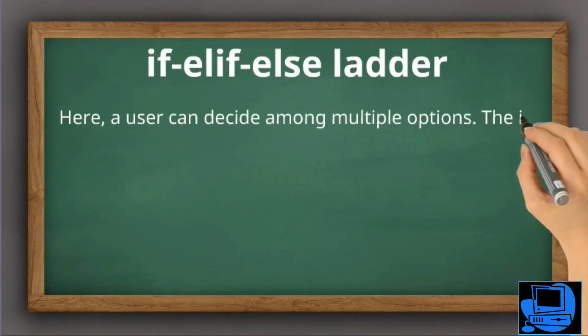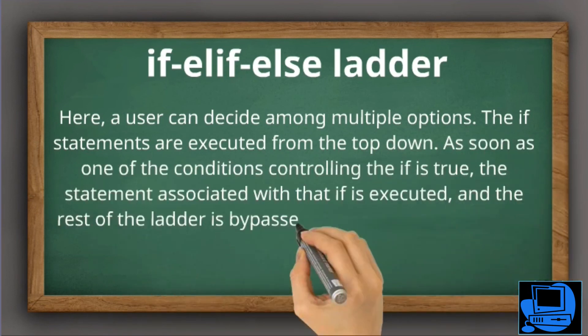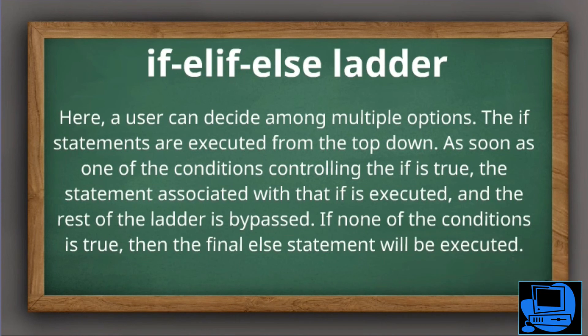If-elif-else ladder. Here, a user can decide among multiple options. The if statements are executed from the top down. As soon as one of the conditions controlling the if is true, the statement associated with that if is executed, and the rest of the ladder is bypassed. If none of the conditions is true, then the final else statement will be executed.